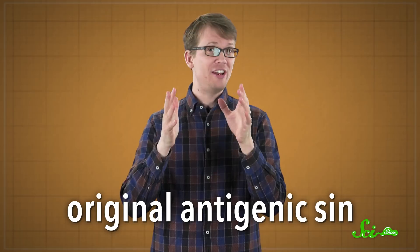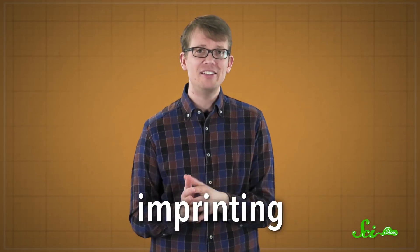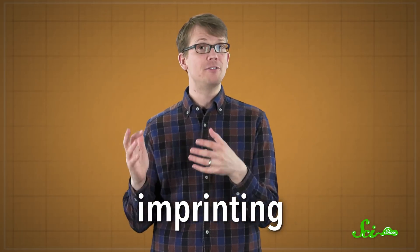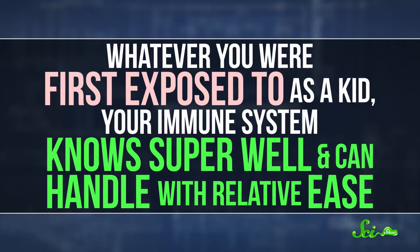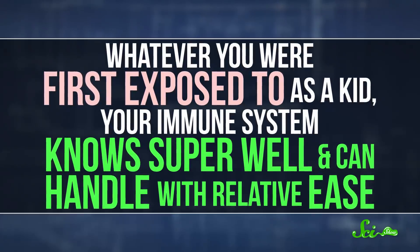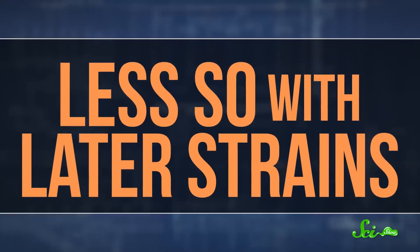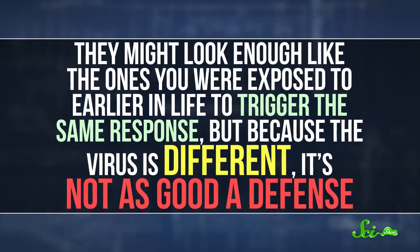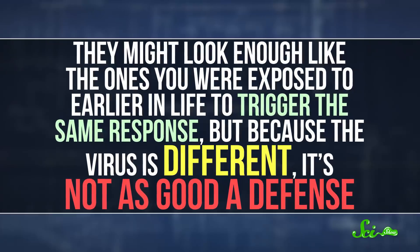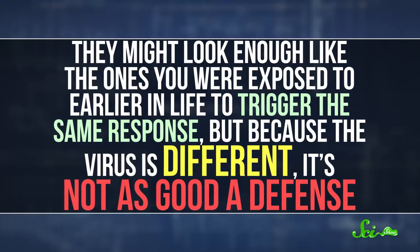It's called original antigenic sin, or imprinting. And the idea is that how well you respond to the flu depends on which flu viruses your immune system sees first. Whatever you were first exposed to as a kid, your immune system knows super well and can handle with relative ease. Less so with later strains. They might look enough like the ones you were exposed to earlier in life to trigger the same response. But because the virus is different, it's not as good a defense.